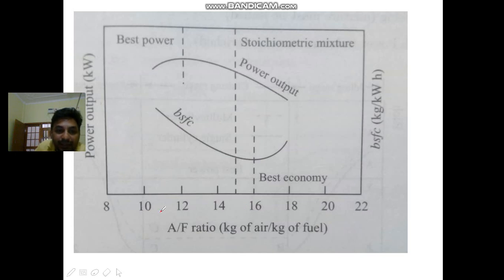I am showing it with red color. This is the power output side and this is your BSFC side, means brake specific fuel consumption. I have already explained brake specific fuel consumption and what is the variation with respect to air fuel ratio.